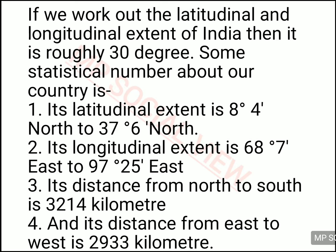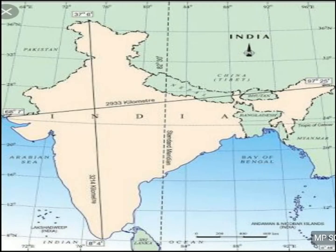I will definitely give the answer for this in today's class. But first, let's see how we can read latitude and longitude on the map. You can see the map on the screen. If you are not able to see it clearly, you can also open the map in your NCERT 11th geography book — it will be on page number 3. In that map, the same map is given with latitudinal and longitudinal values.